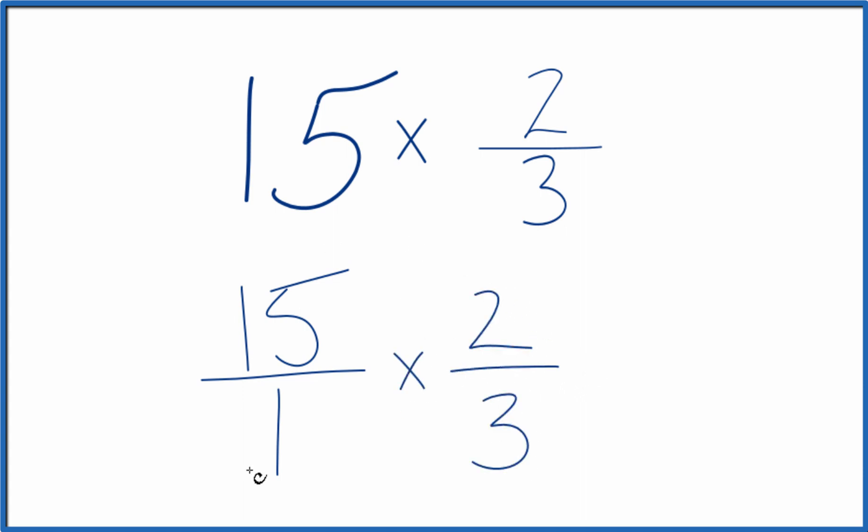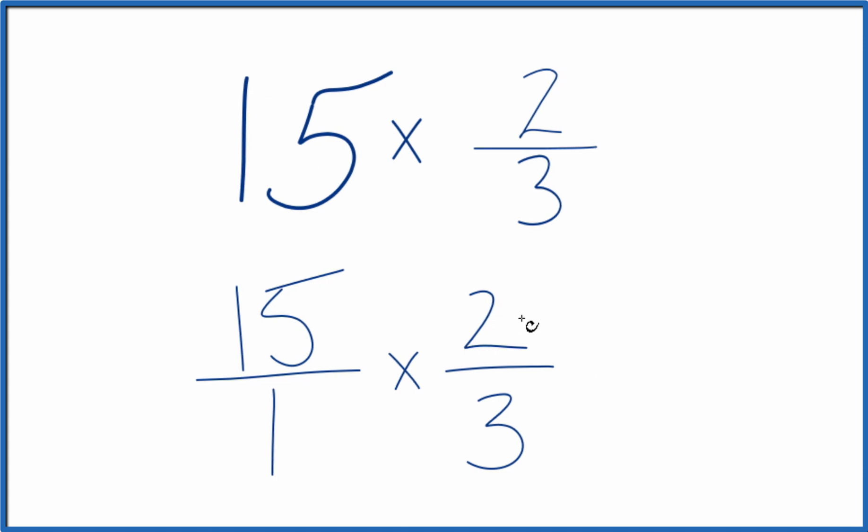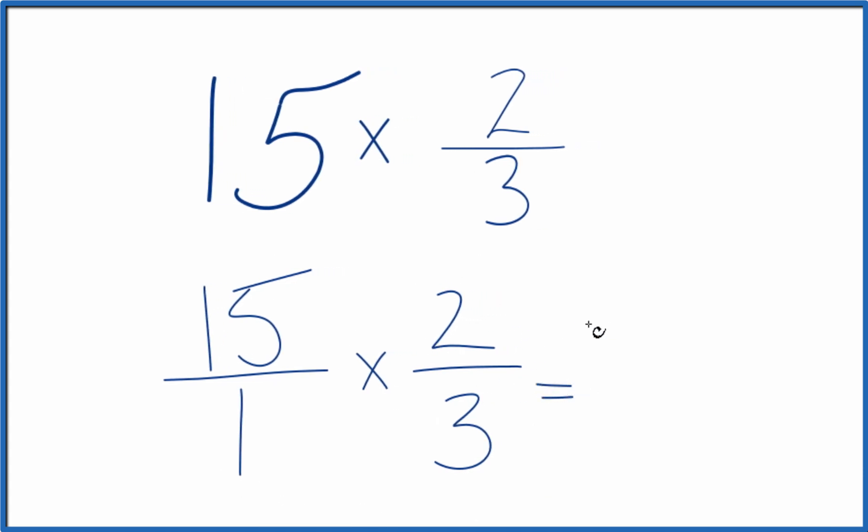When we multiply fractions here, we multiply the numerators and then the denominators. So 15 times 2, that's 30. 1 times 3 is 3.